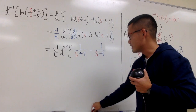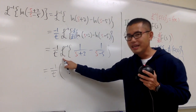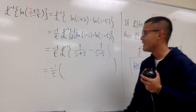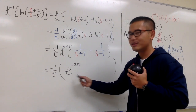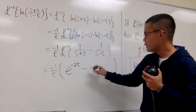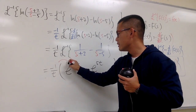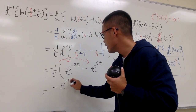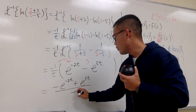We can split this: take the inverse Laplace of 1/(s+2) and minus the inverse Laplace of 1/(s-5). The inverse Laplace of 1/(s+2) is e^(-2t), and the inverse Laplace of 1/(s-5) is e^(5t). Distributing the negative 1/t, we get: (-e^(-2t) + e^(5t)) / t, which simplifies to (e^(5t) - e^(-2t)) / t.